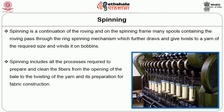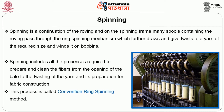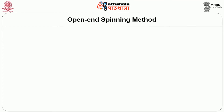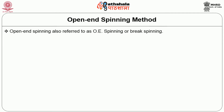Spinning includes all the processes required to prepare and clean the fibers from the opening of the bale, the twisting of the yarn and its preparation for fabric construction. This process is called the conventional ring spinning method. Now let us see the yarn manufacturing system, which covers the other spinning methods. First is the open-end spinning method, also referred to as OE spinning or brake spinning.